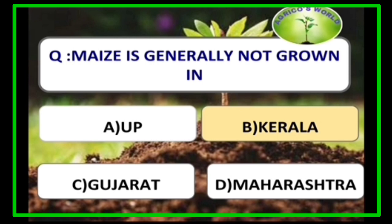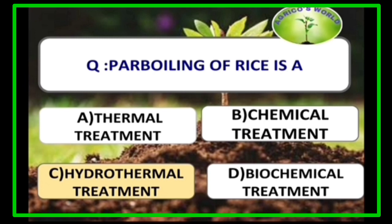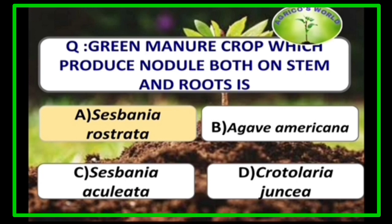Maize is generally not grown in Kerala because the soil is not suitable for growing maize. Wheat cultivated in India belongs to spring wheat; winter wheat is not grown because it requires vernalization treatments. Parboiling of rice is a hydrothermal treatment and it conserves vitamin B1.